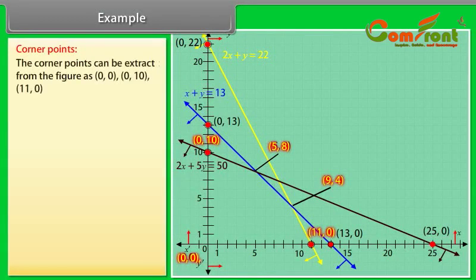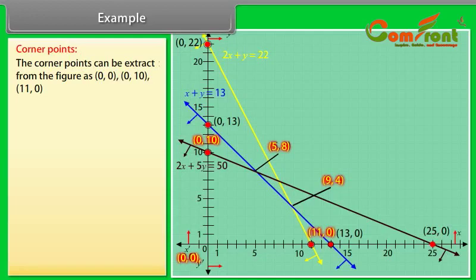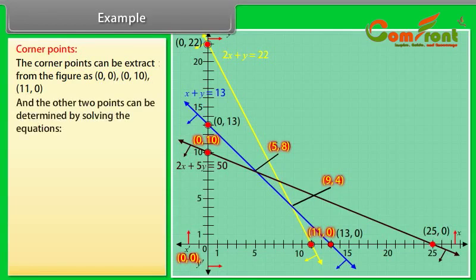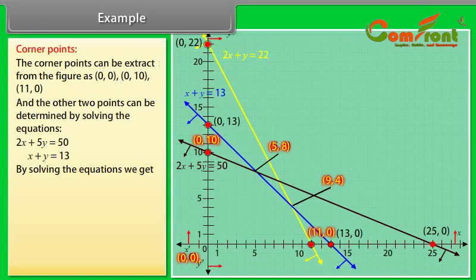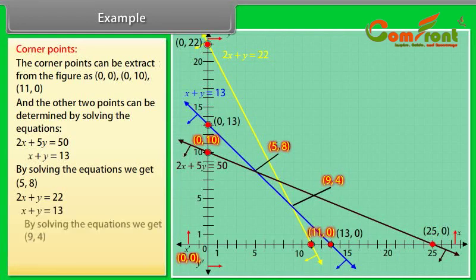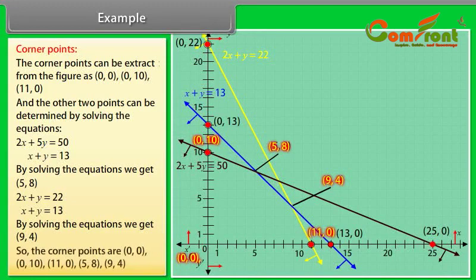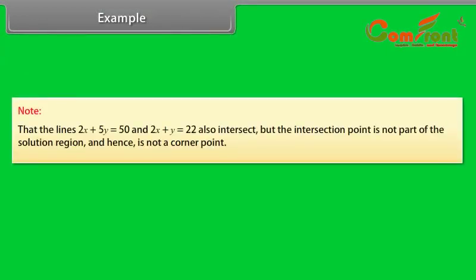Let's find the corner points. The corner points from the figure are (0, 0), (0, 10), and (11, 0). The other two points are determined by solving pairs of equations: solving 2x plus 5y equals 50 and x plus y equals 13 gives the point (5, 8); solving 2x plus y equals 22 and x plus y equals 13 gives the point (9, 4). So the corner points are (0, 0), (0, 10), (11, 0), (5, 8), and (9, 4). Note that the lines 2x plus 5y equals 50 and 2x plus y equals 22 also intersect, but the intersection point is not part of the solution region and hence is not a corner point.